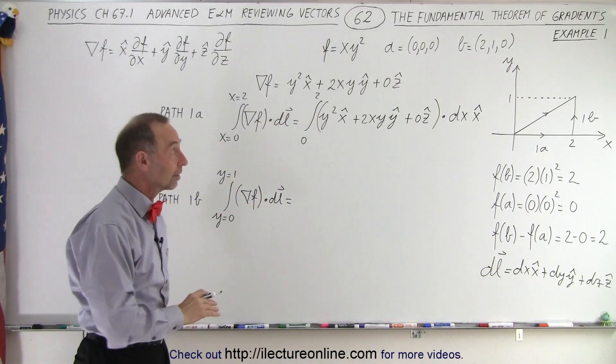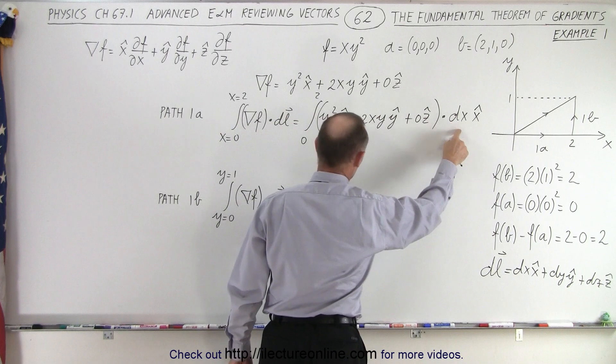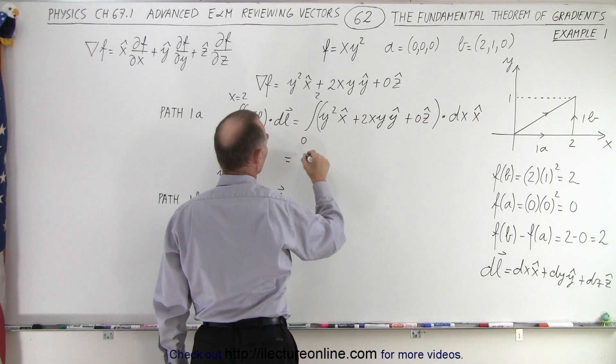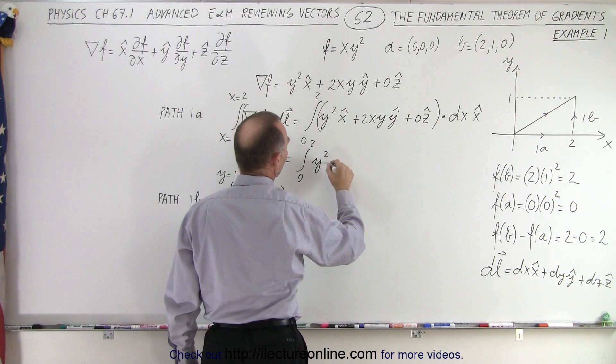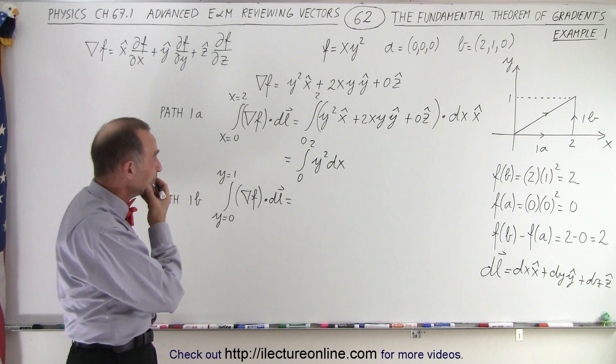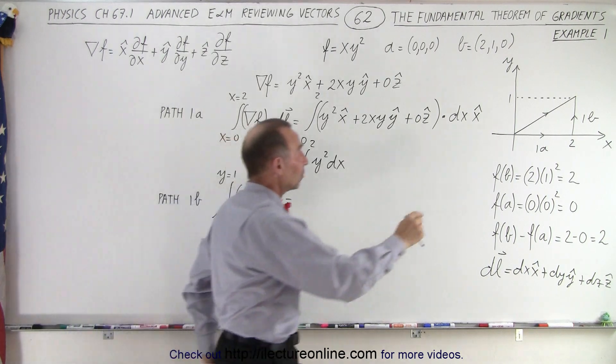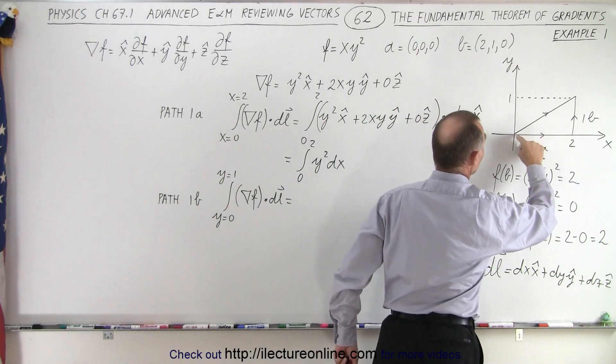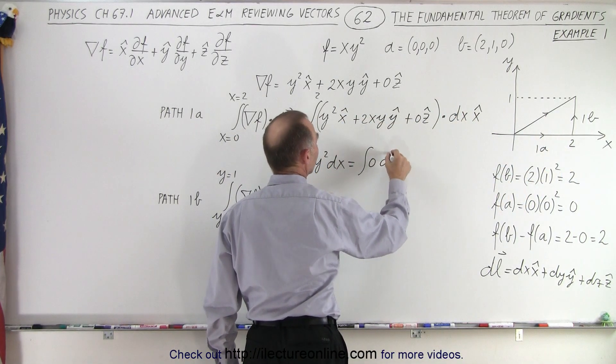And when we do the dot product, there's only one component over here, and only the x component survives, so this is equal to the integral from 0 to 2 of y squared times dx. And of course, y squared, what is y? Well, in this case, y is going to be 0 for the entire length from here to here, so we know that this is equal to the integral of 0 dx.